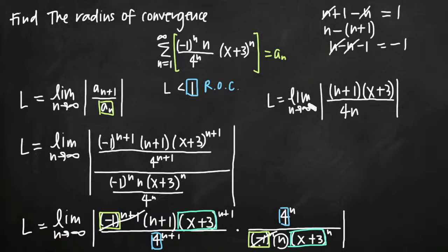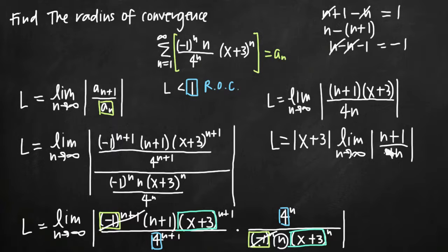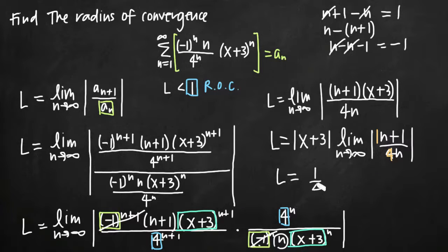At this point, because we have the limit as n goes to infinity, we only need to keep terms involving n inside the absolute value bars. Terms involving x can be pulled out in front because they're not affected by the limit, but we keep the absolute value bars on any value we pull out. So L equals the absolute value of x plus 3 times the limit as n goes to infinity of the absolute value of n plus 1 divided by 4n. Taking that limit of the rational function, we look at the coefficients of the highest degree n terms: 1 over 4, so the limit is 1 fourth. Therefore L equals one fourth times the absolute value of x plus 3.